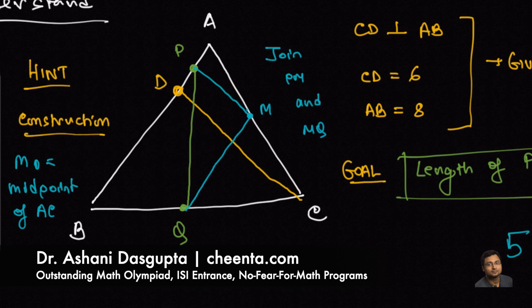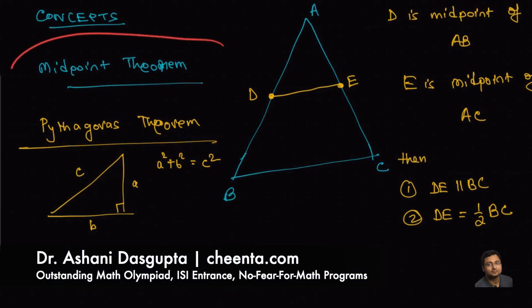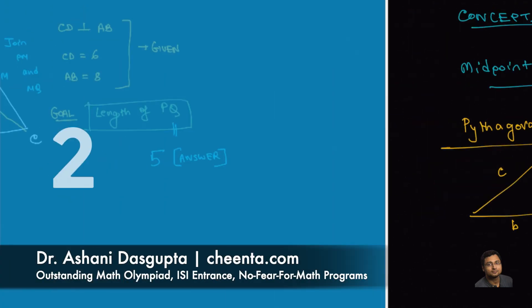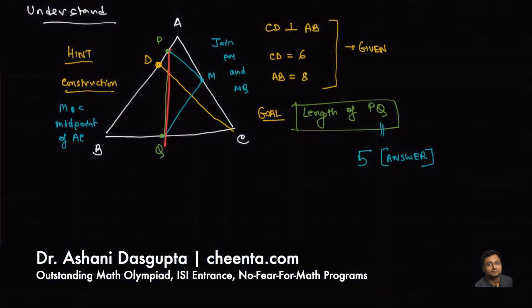That's it. That is the hint. This construction is the hint. Can you use this hint and the midpoint theorem to finish up the proof that PQ is 5 cm long?